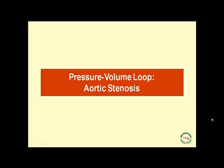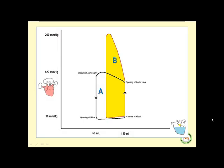This brings us to the pressure-volume loop pathophysiology of aortic stenosis. This diagram shows a normal pressure-volume loop for the left ventricle, labeled A, and the classic pressure-volume loop in a patient with aortic stenosis, labeled pressure-volume loop B.